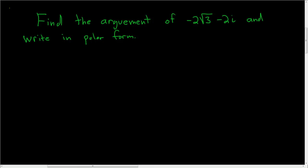Find the argument of negative 2 square root of 3 minus 2i and write in polar form. Before we do this problem, let's briefly discuss what the argument of a complex number is.